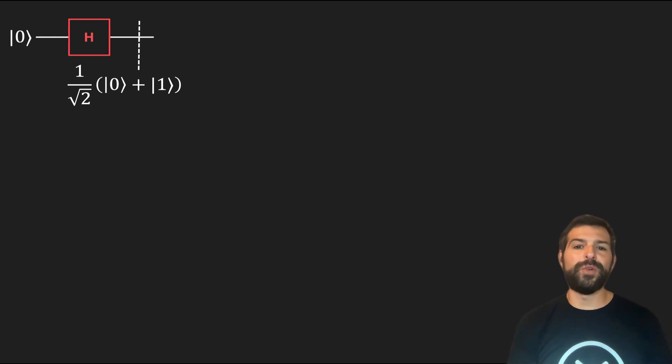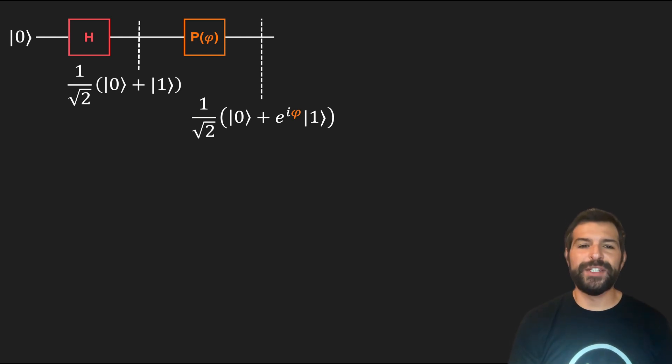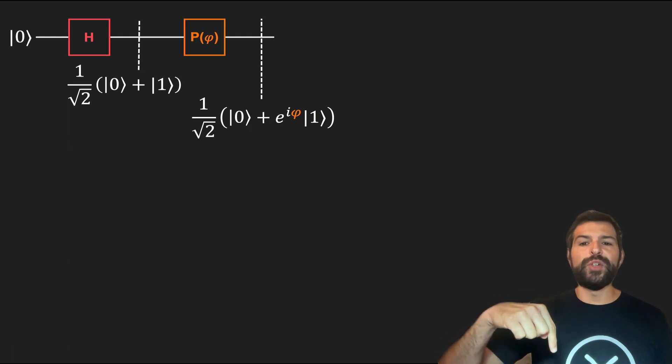We then apply what is known as a phase gate, which is responsible for adding a relative phase between state 0 and state 1. Now if we want to assign some physical meaning to this phase, we can think again about our electron model, where state 0 is the electron pointing up, and state 1 is the electron pointing down. So a superposition of 0 and 1 would be, for example, the spin of the electron pointing out of the screen. So changing this phase is equivalent to rotating the electron on the plane perpendicular to the spin in the up direction.